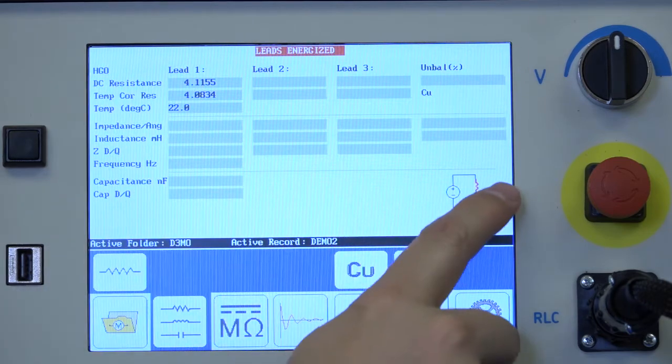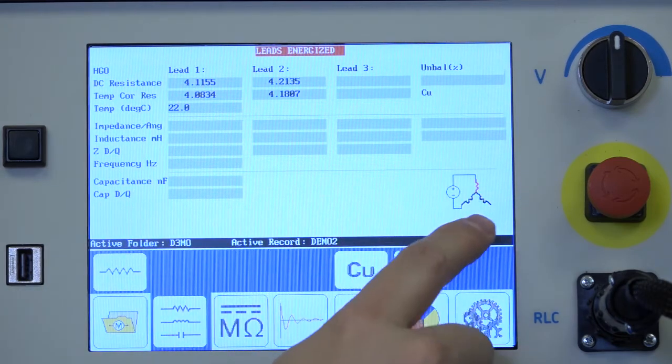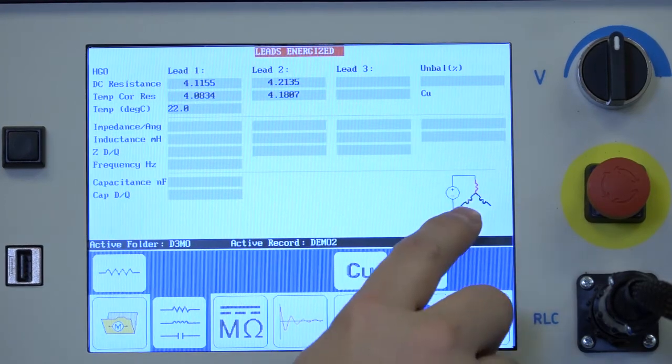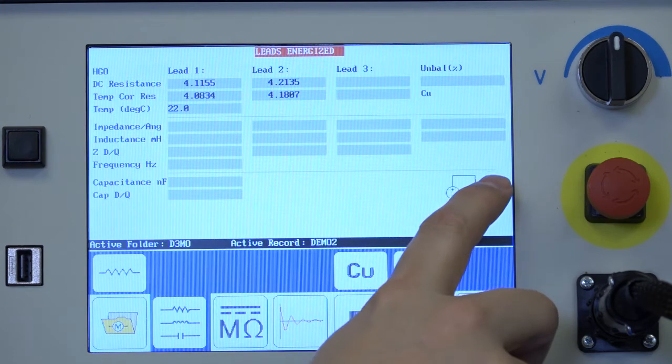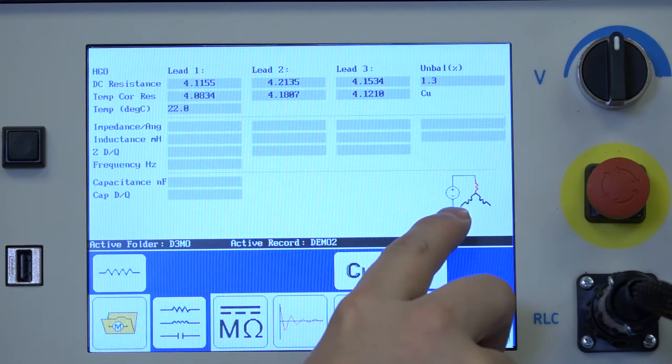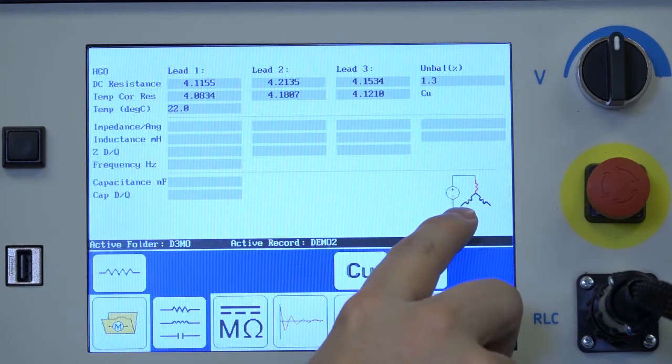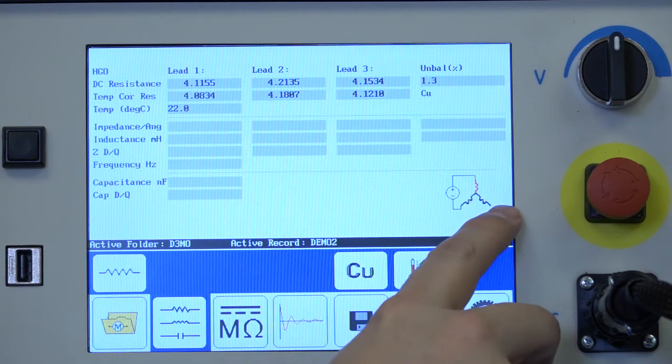In the lower right hand corner here we see a little diagram that defines the mode of lead energization. In this case it's hot on lead one. And then the other lead, lead two in this case, would be grounded. And the other lead is open.